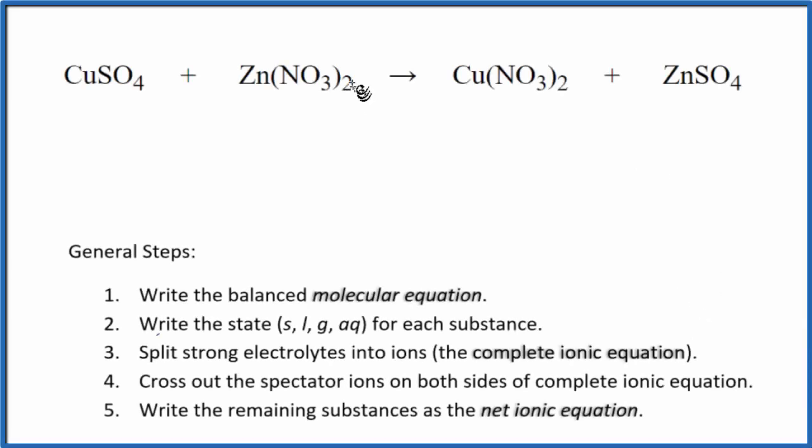In this video we're going to look at the net ionic equation for CuSO4 plus Zn(NO3)2, copper sulfate and zinc nitrate. I'll tell you right away that there is no reaction here. That's because all of these are soluble. But let's just take a look at it and make sure we understand why.